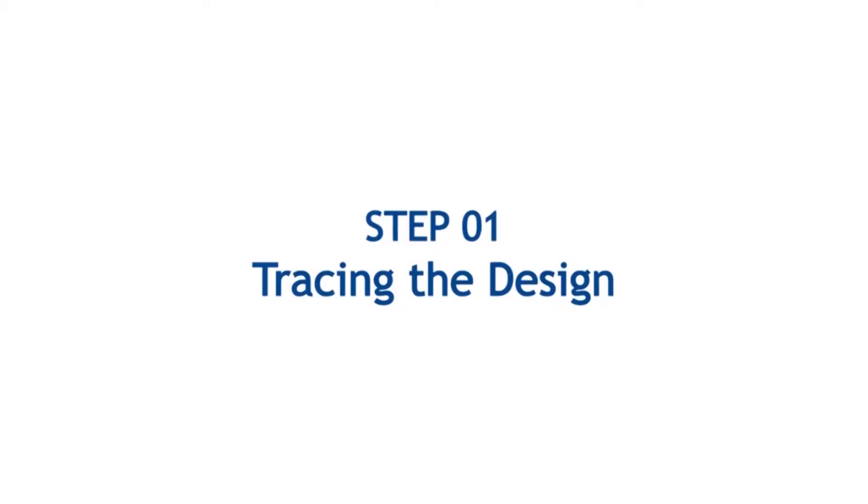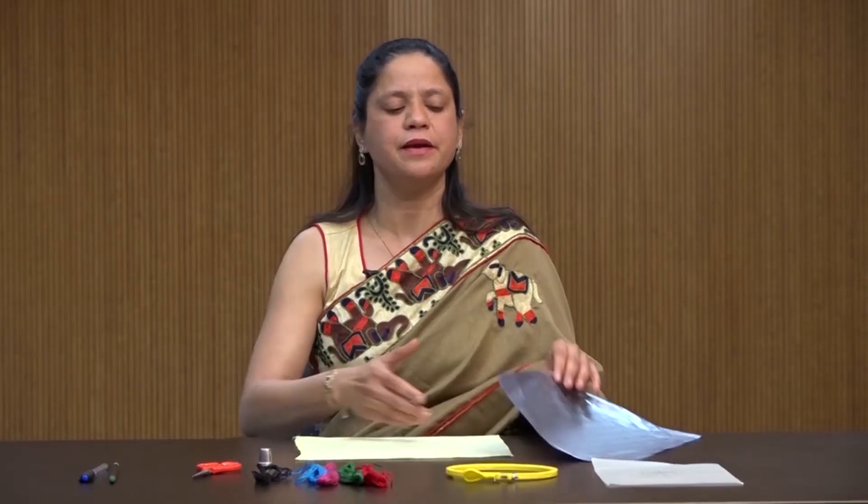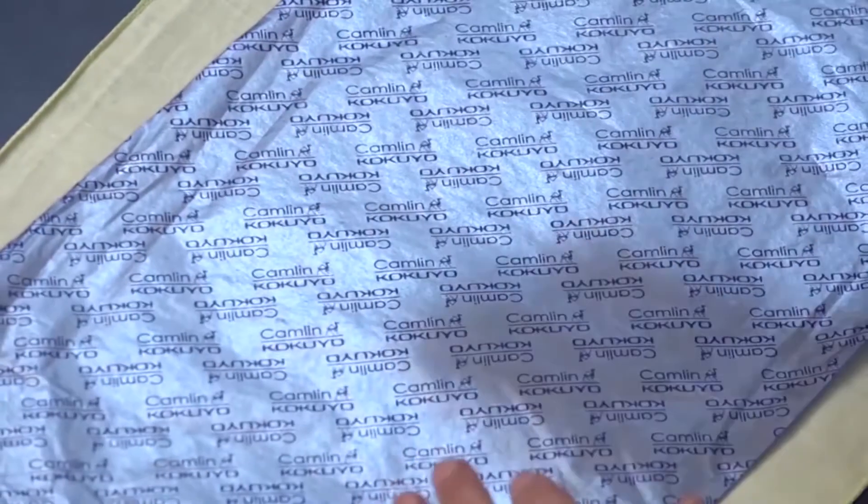Before starting embroidery work, ensure the fabric is clean, starch-free, and ironed. To trace your design on fabric through carbon paper, place your fabric on an even surface. The place should be neat and clean. Now place the carbon paper and place the design sheet.